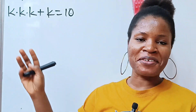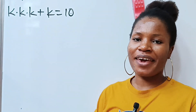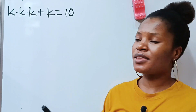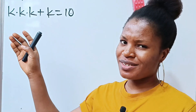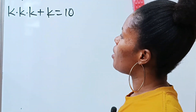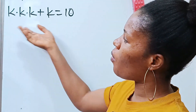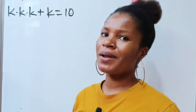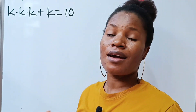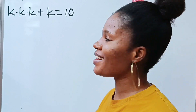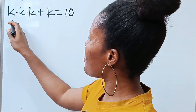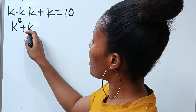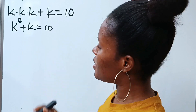Hi, let's solve for the value of k. Welcome to my channel. Today we are asked to solve this together. Now look at what we have: k multiplied by k multiplied by k is simply k to the power of 3. So we can write k to the power of 3 plus k is equal to 10.